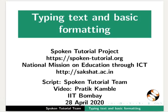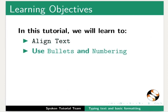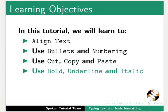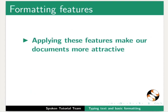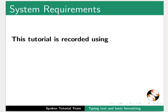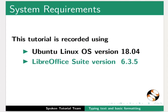Welcome to the spoken tutorial on typing text and basic formatting. In this tutorial we will learn to align text, use bullets and numbering, use cut, copy and paste options, use bold, underline and italic options, and use the font name, font size, and font color options in Writer. This tutorial is recorded using Ubuntu Linux OS version 18.04 and LibreOffice Suite version 6.3.5.